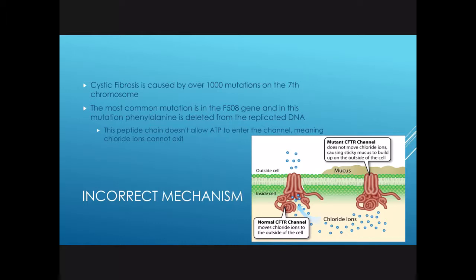Cystic fibrosis is caused by over a thousand mutations on the seventh chromosome, so there are a thousand different possibilities. But the most common one is that the F508 gene is deleted from the replication of the DNA. This peptide chain doesn't allow ATP to enter the channel, meaning chloride ions cannot exit. The channel is effectively blocked, and therefore all of these chloride ions are unable to leave the cells.